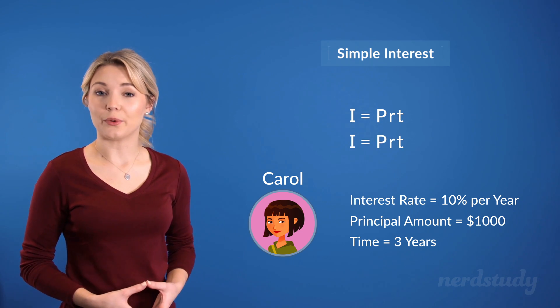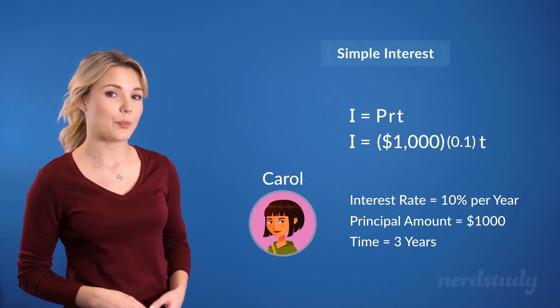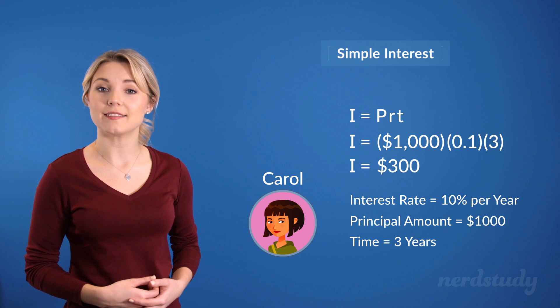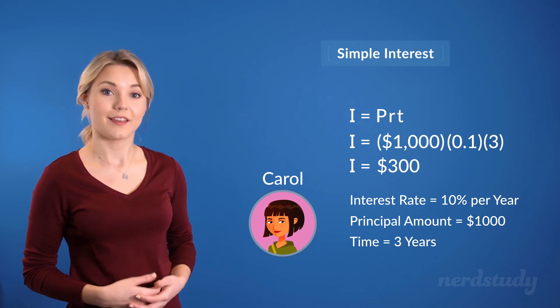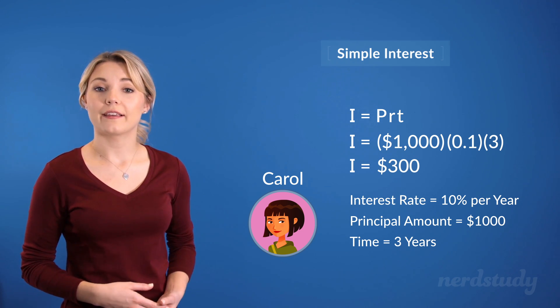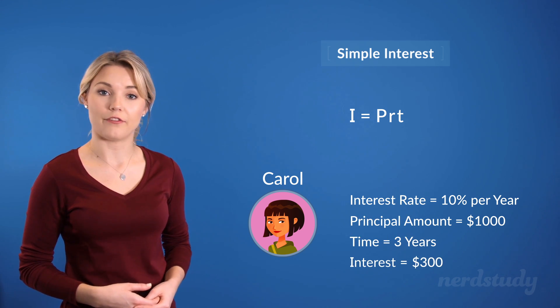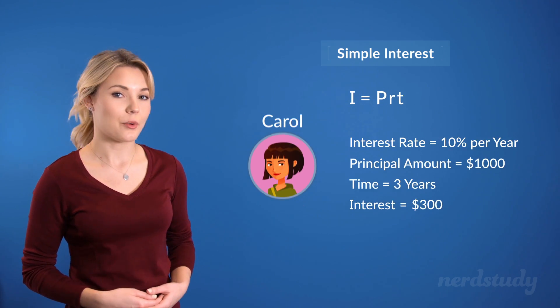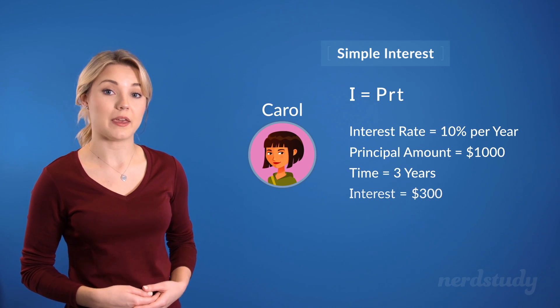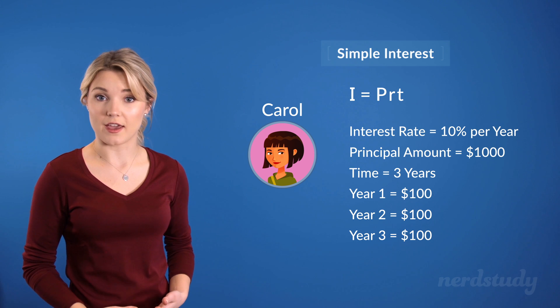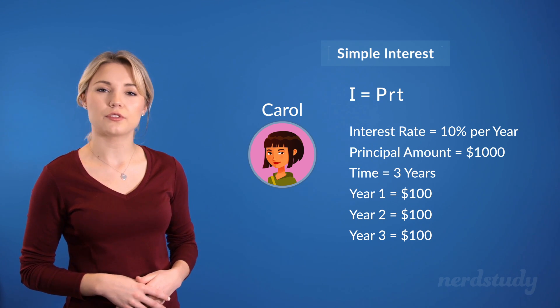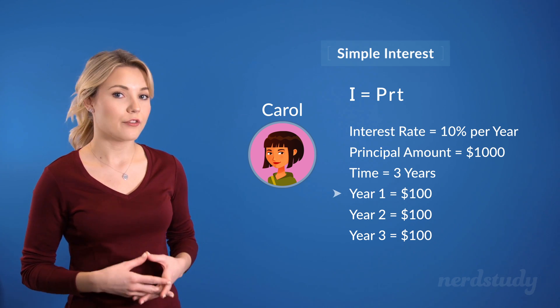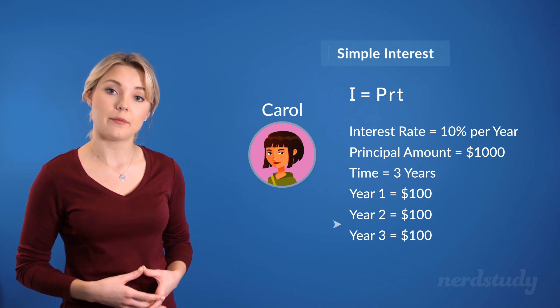So, I is equal to 1000 times 0.10 times 3, and if we simplify this, we get I is equal to 300. Good! Therefore, Carol makes a total of $300 in profit after three years of simple interest. This equates to $100 being made per year for three years. So, remember, there was no so-called stacking effect in simple interest. Every year, Carol made the exact same amount in interest.